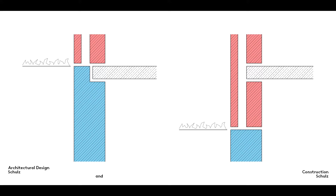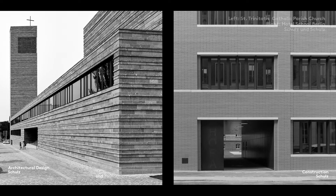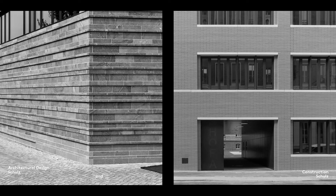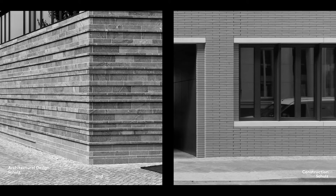There is no sense in sinking an expensive double-skin wall into the ground. The base of the building should nevertheless be recessed a few centimetres into the ground to ensure that the solid appearance of the façade corresponds to that of a building growing out of the ground. Another decision is whether the base should mark the transition to a more resistant material, as in our Provost Church in Leipzig on the left, or whether the bricks of the facing skin should run right down into the ground, as in our Berlin School of Hotel Management on the right.